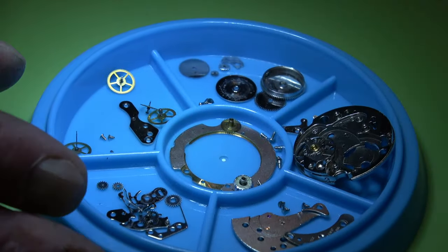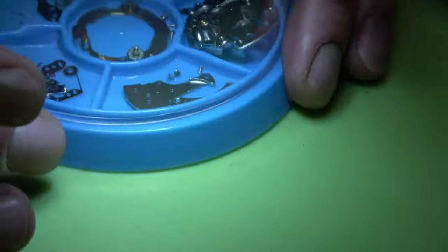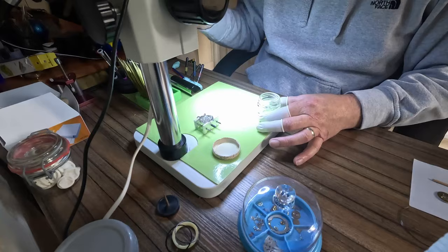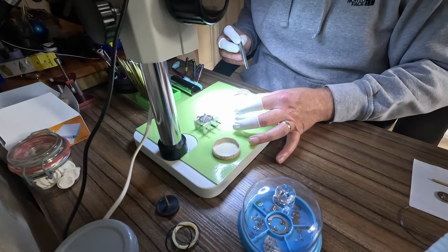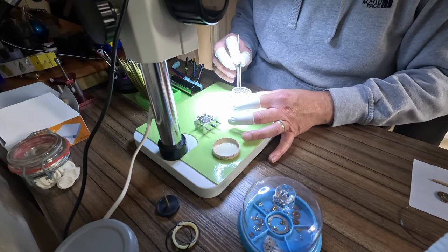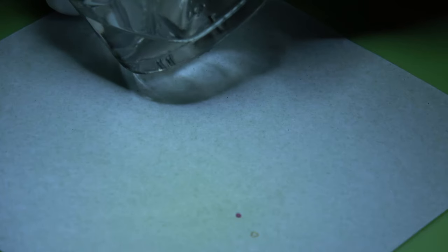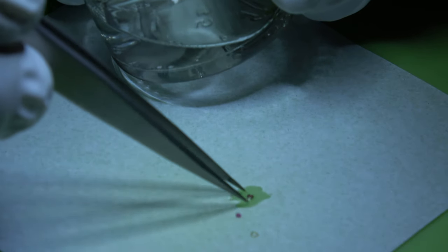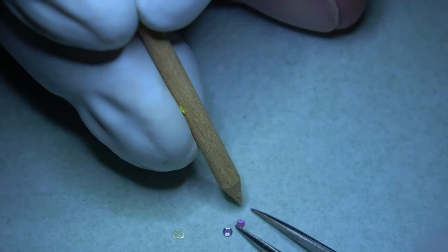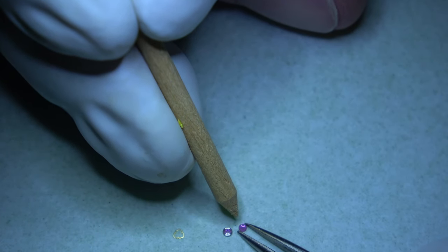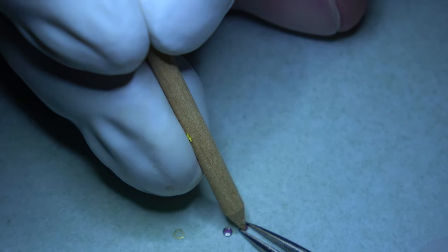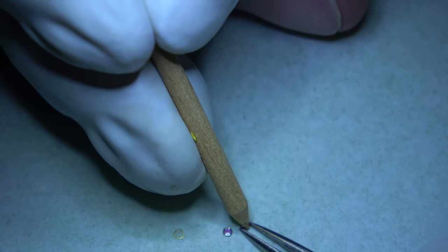There we go, there's all of the parts. Let's start getting it reassembled. The first thing we're going to do is put the cap jewels back in.